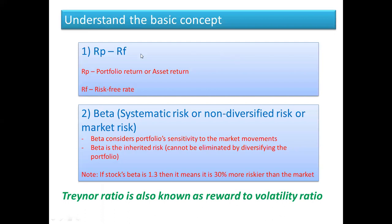If you look at the first box, it shows RP and RF. What is RP? What is RF? RP is portfolio return or asset return, and RF is risk-free rate, or you can say it is the treasury rate.